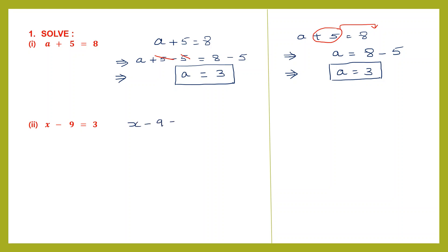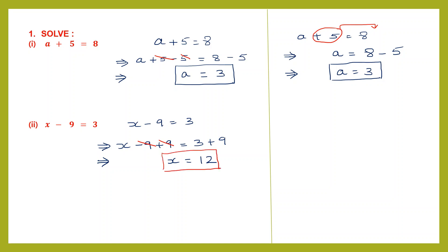Next question: x − 9 = 3. We want only x, so we need to remove −9 by adding 9. Minus 9 plus 9 gets cancelled, leaving x. On the other side, 3 + 9 = 12, so x = 12. Using the transposition method: x − 9 = 3. We transpose −9 to the right-hand side, where it becomes +9. So x = 3 + 9 = 12. We have solved for x.